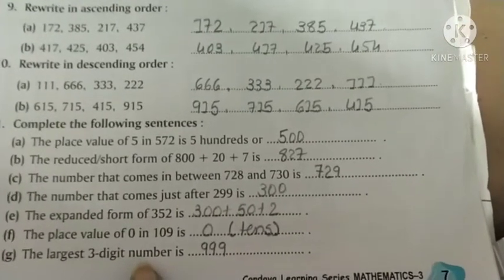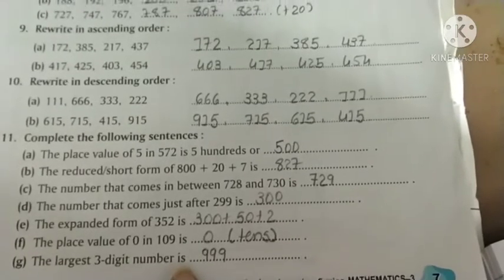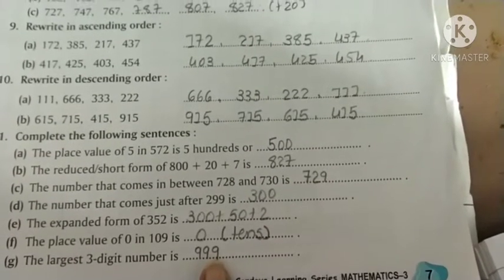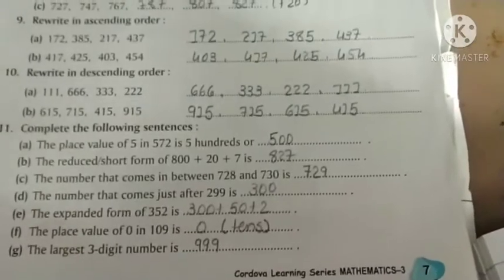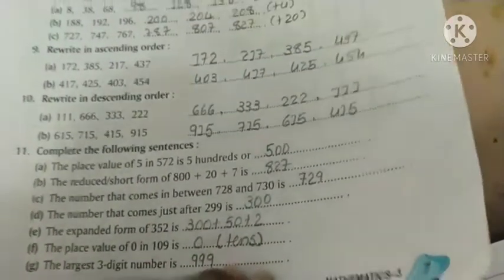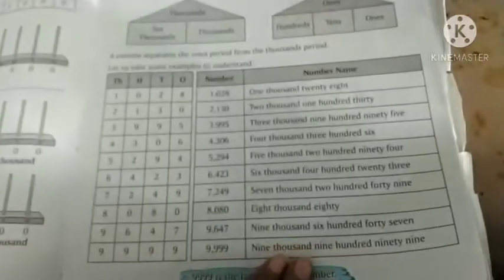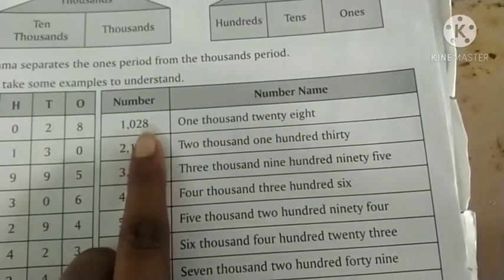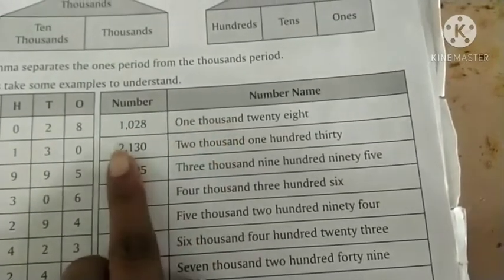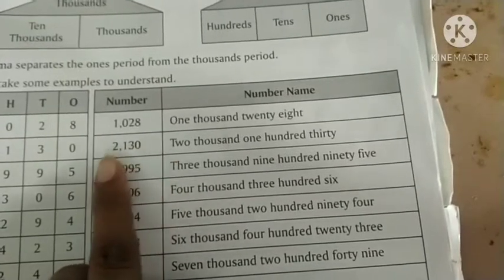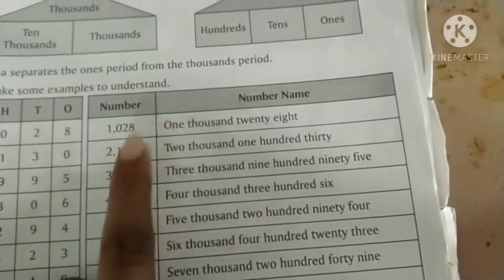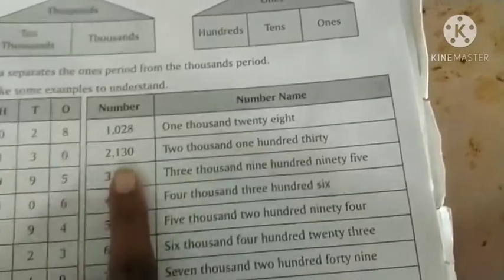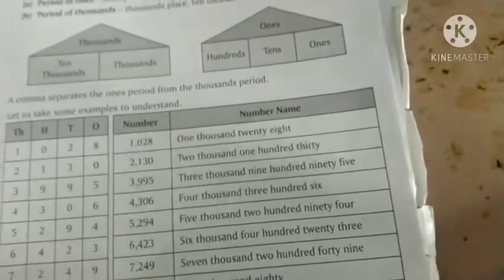The largest 3-digit number is 999, because after 999 comes 1000 which is 4 digits. For 4-digit numbers, the first digit gets 1000 and second gets 100. For 2130, read it as two thousand one hundred thirty.